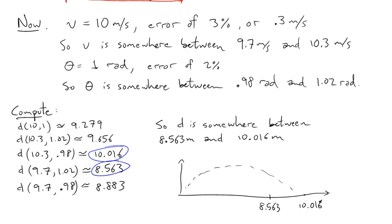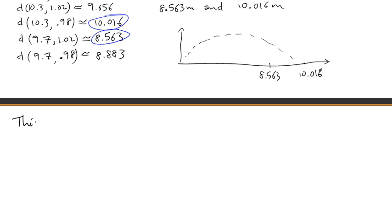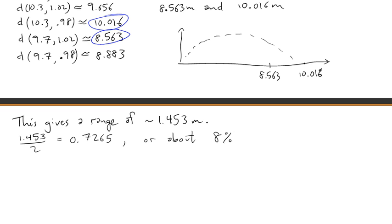That's using the formula for d of v and theta. Now this gives a range in the measurements of about 1.453 meters. And if you divide that in half there, you get about 0.7265. And in relation to d at 10 and 1, that's about an 8 percent error. Rounding up, that's about 73 centimeters.